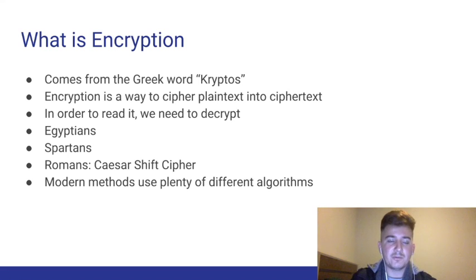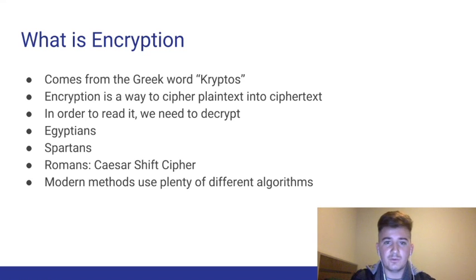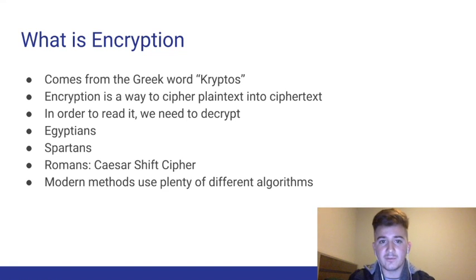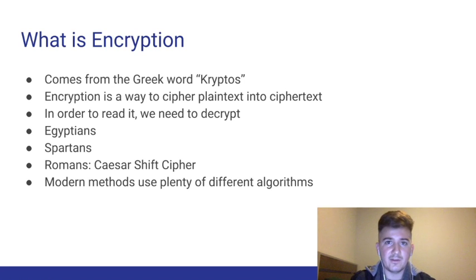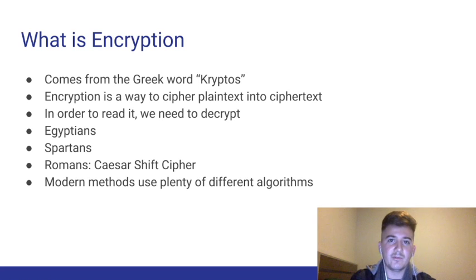Encryption goes way back to the Greeks, the Egyptians, the Spartans, the Romans — they all used it. What Egyptians would do is write non-standard hieroglyphics, and nobody could really read hieroglyphics back then, so that was enough to encrypt their messages. What Spartans would do is write their messages in leather and wrap it around sticks. When you laid the leather flat, you wouldn't be able to tell what it said. But if you had a stick of the same radius and wrapped the leather around it, you would be able to see the message.